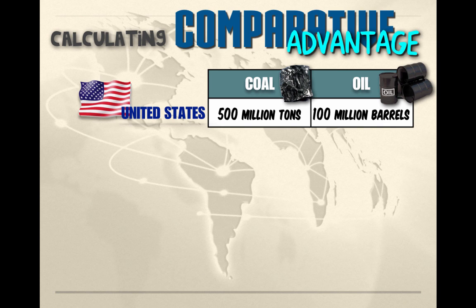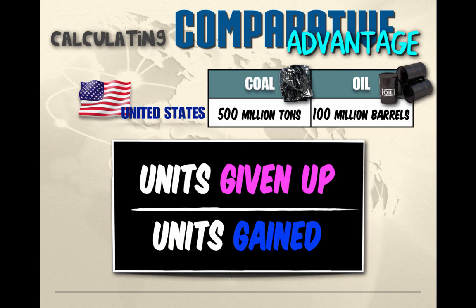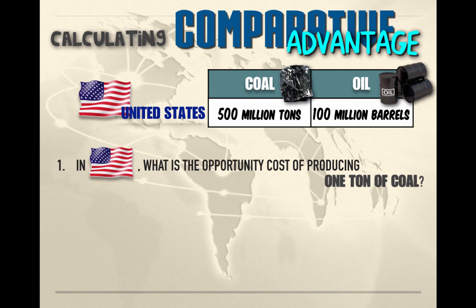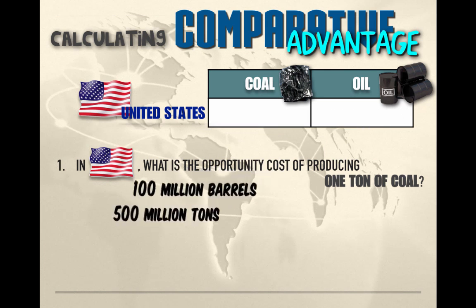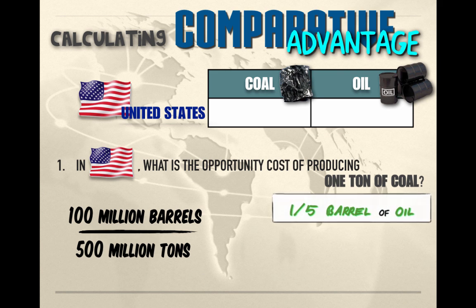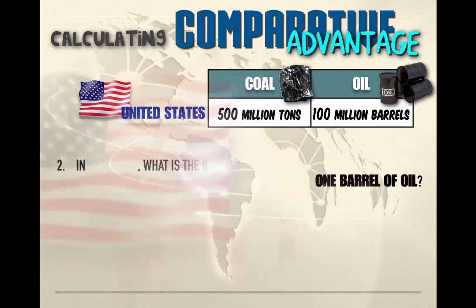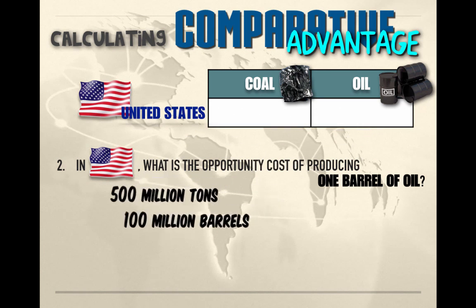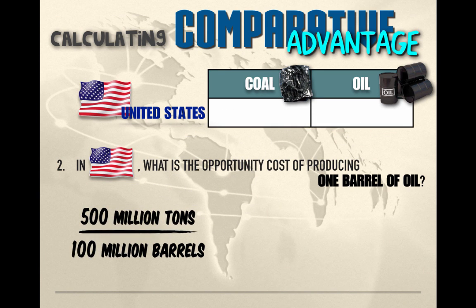When looking at per-unit opportunity cost, we use units given up divided by units gained. The United States can produce 500 million tons of coal or 100 million barrels of oil. The per-unit opportunity cost of producing one ton of coal in the United States is one-fifth of a barrel of oil. The per-unit opportunity cost of producing one barrel of oil in the United States is five tons of coal, since the US gives up the ability to produce 500 million tons of coal in order to produce 100 million barrels of oil.